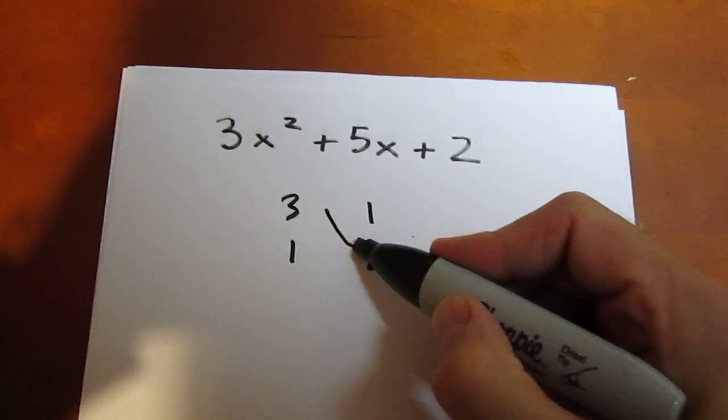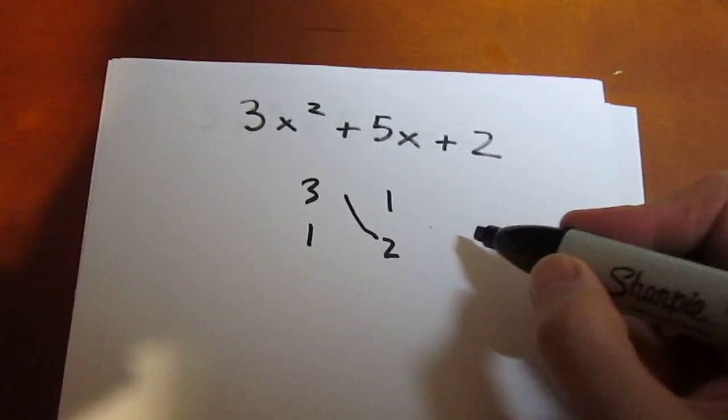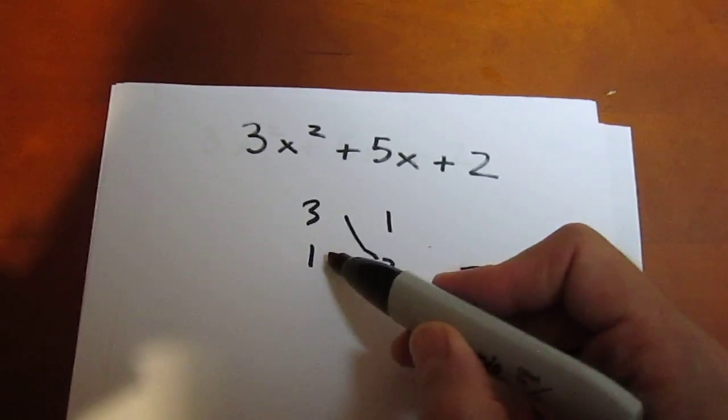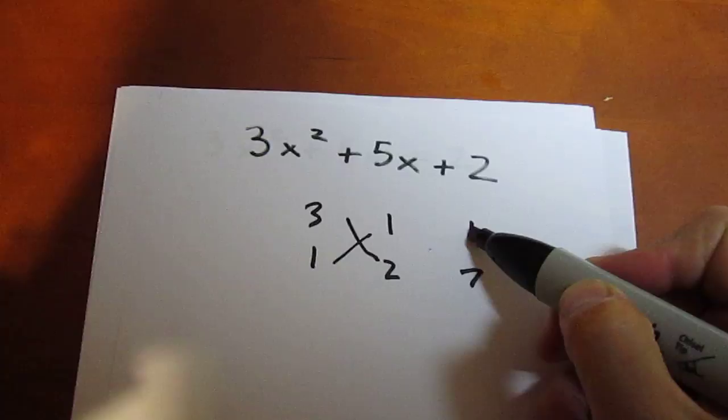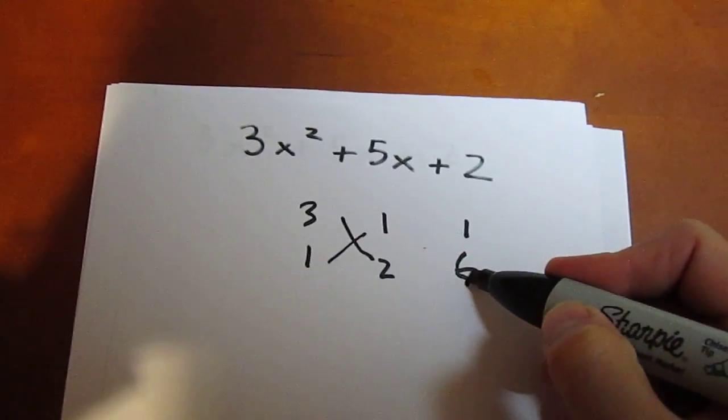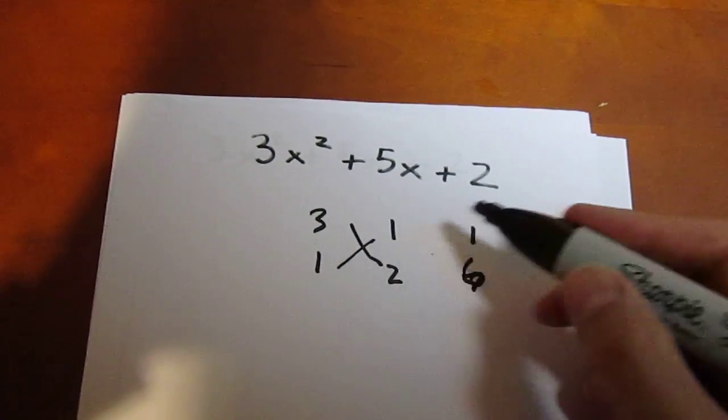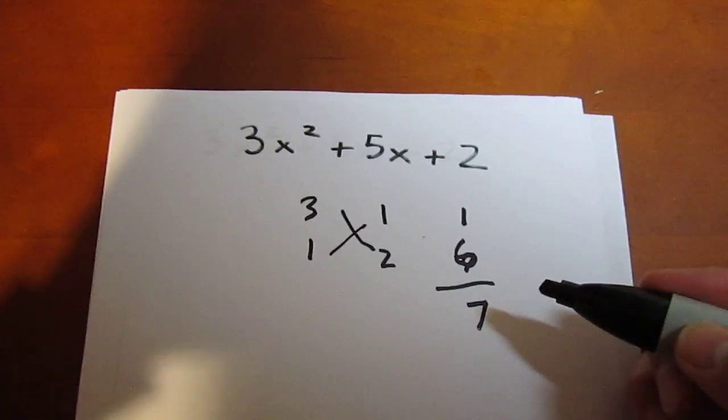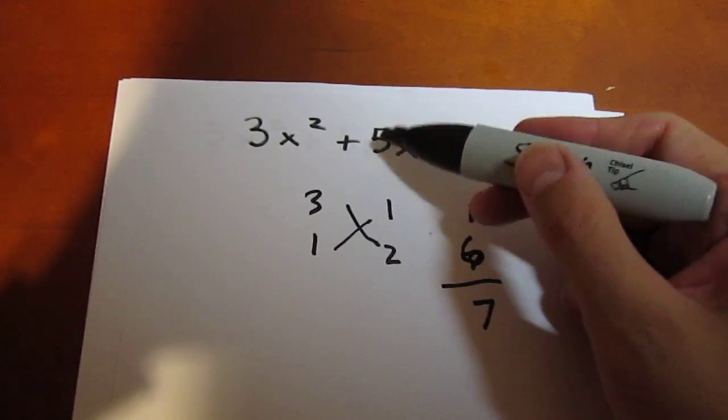If I criss-cross here, 3 times 2 is 6. 1 times 1 is 1. When I add these up, I get 7. Well, I wanted to get 5.